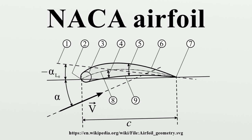One series: A new approach to airfoil design pioneered in the 1930s, in which the airfoil shape was mathematically derived from the desired lift characteristics. Prior to this, airfoil shapes were first created and then had their characteristics measured in a wind tunnel. The one series airfoils are described by five digits: the number 1 indicating the series, one digit describing the distance of the minimum pressure area in tens of percent of chord, a hyphen, one digit describing the lift coefficient in tens, and two digits describing the maximum thickness in percent of chord. For example, the NACA 16-123 airfoil has minimum pressure 60% of the chord back, a lift coefficient of 0.1, and maximum thickness of 23% of the chord.